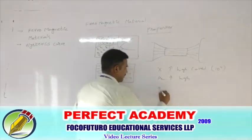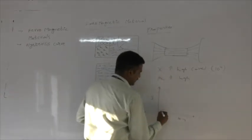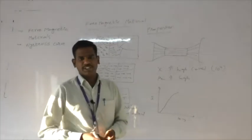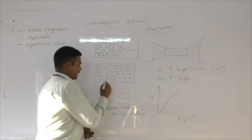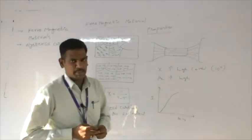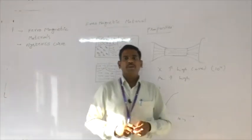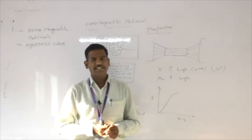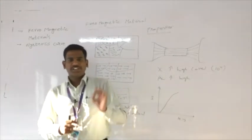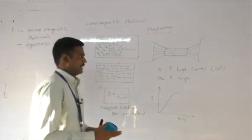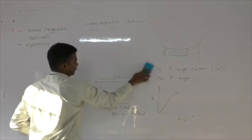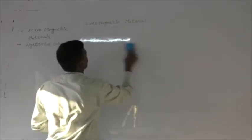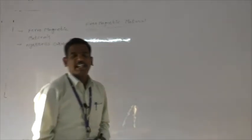If we plot intensity of magnetization versus magnetic field intensity for a ferromagnetic material, the graph will have a specific nature. Now let us look at the very important concept related to ferromagnetic materials: the hysteresis curve, also called the hysteresis graph or hysteresis loop, which is the characteristic property of ferromagnetic materials.